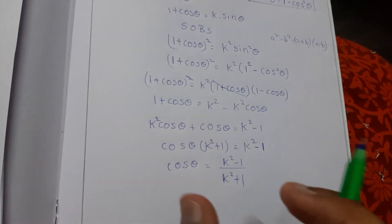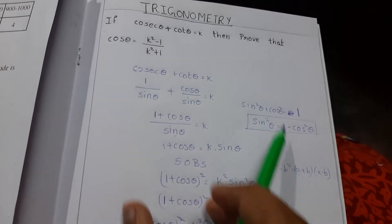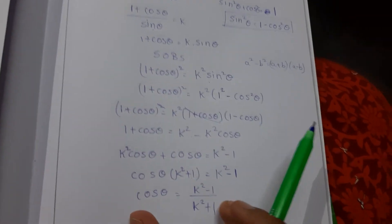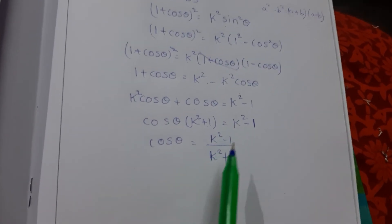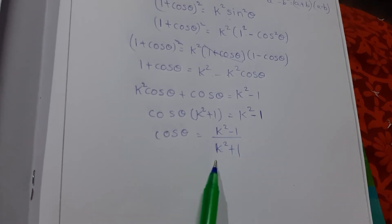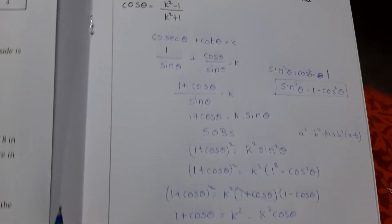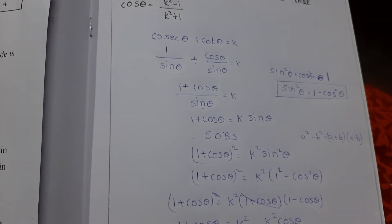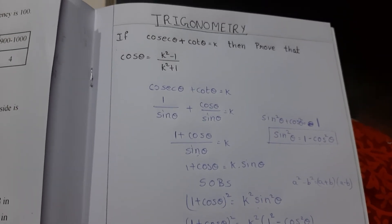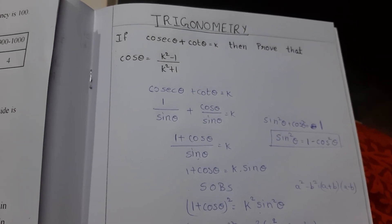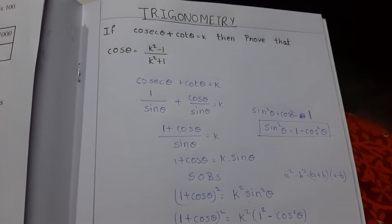We multiply both sides to simplify the equation for cos theta. Thanks for watching friends. Please subscribe to SandhyaPedia's channel. If you have any doubts, please comment.